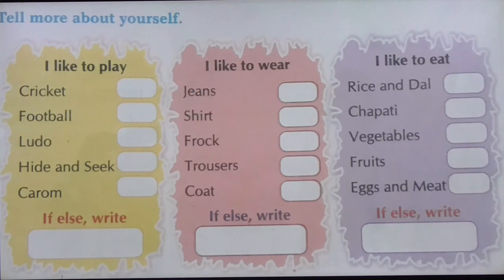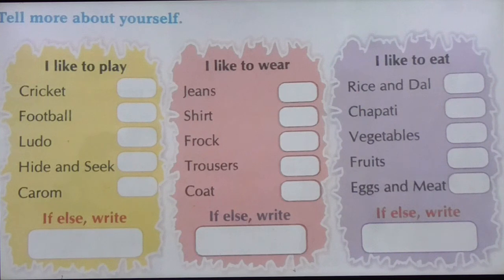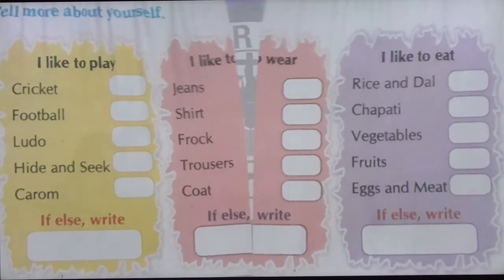अगर कुछ और पसंद हो तो नीचे लिख सकते हैं। I like to eat — rice and dal, chapati, vegetable, fruits, egg and meat — अगर यहाँ पर कोई भी चीज़ नहीं है जो आपको पसंद है, तो आप नीचे उस पसंदीदा चीज़ का नाम लिख सकते हैं।